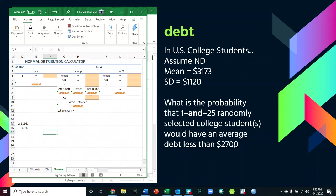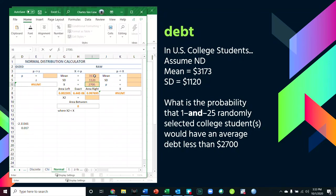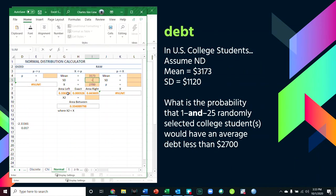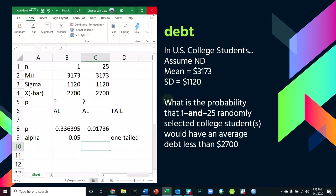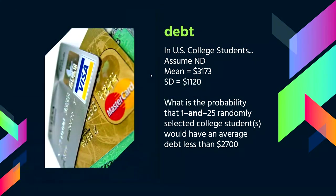If we come over to the normal distribution calculator, we can use it to turn an x-score into a p-value — I know it's an x because debt in dollars is in the original units, not a Z-score. Put in the population mean, the standard deviation, the value of x, and there is the area left — the tail I want. For the case of 25 students, I use the standard error: 1120 divided by the square root of 25. That gives me the p-value using the normal distribution calculator I built.